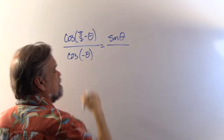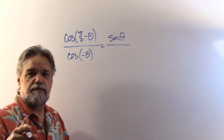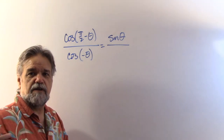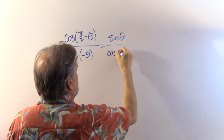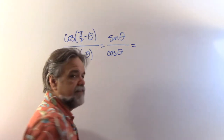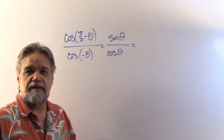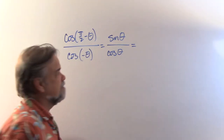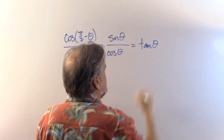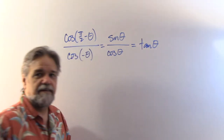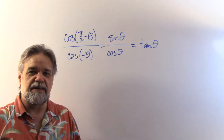And the cosine of negative theta — I know that cosine is an even function, so cosine of negative theta is just the same thing as the cosine of theta. And sine divided by cosine — I know a better name for that. That's the tangent. So this is just the tangent of theta. Number one didn't prove to be all that challenging.